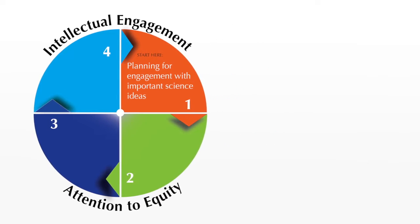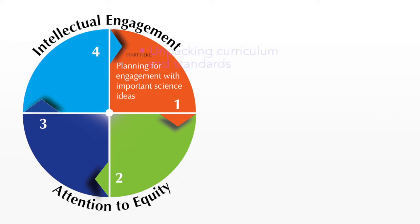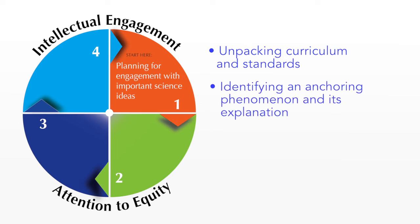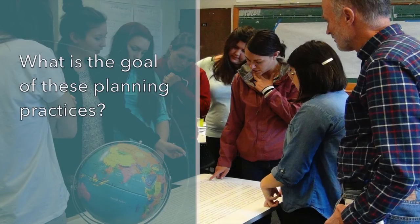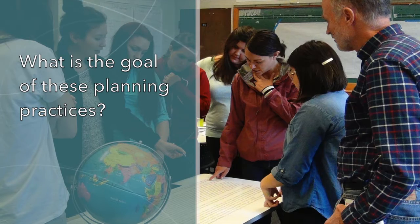This first set is referred to as planning for engagement with important science ideas. There are three practices involved: the first is to unpack your curriculum and the standards around the topic you intend to teach, the second is identifying an anchoring phenomenon and its explanation, and the third is organizing a sequence of learning experiences for your students.